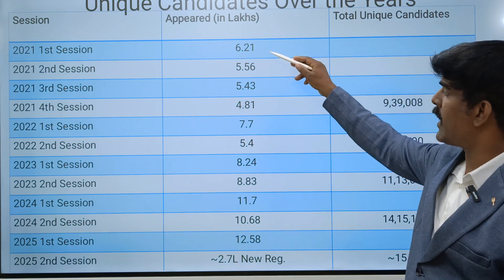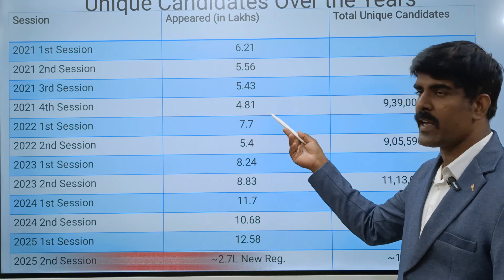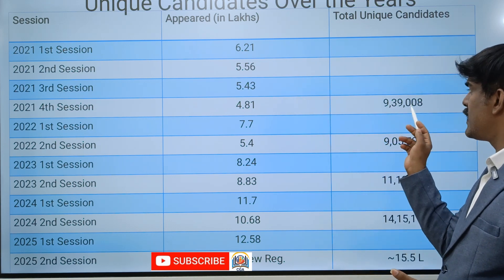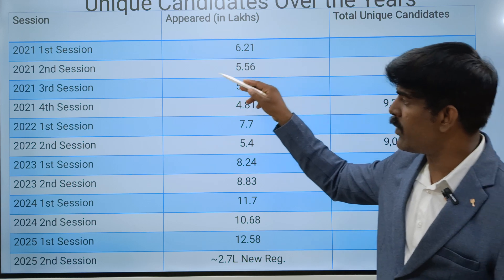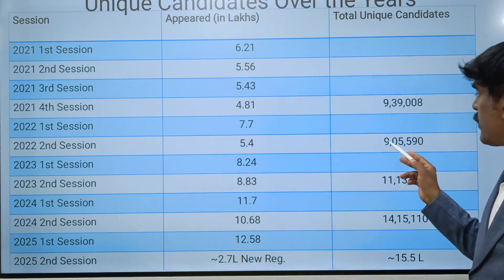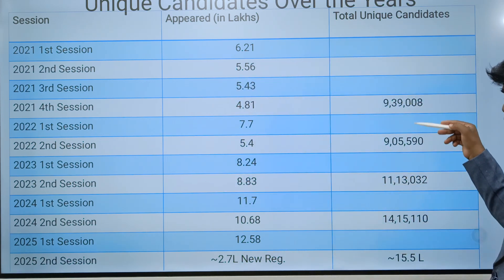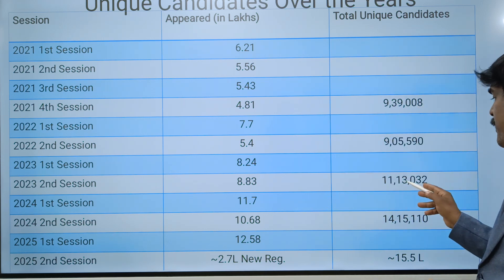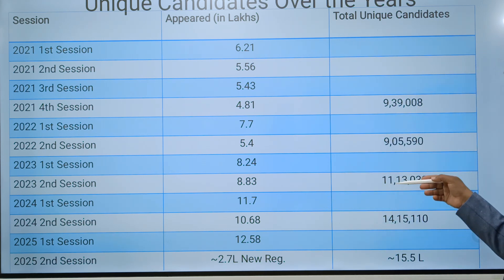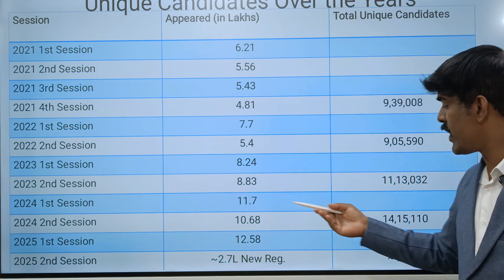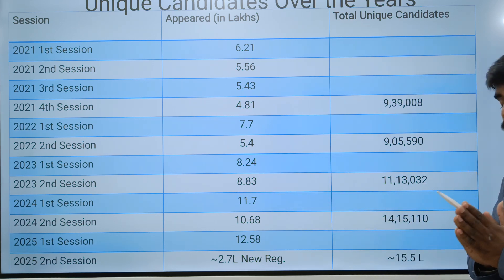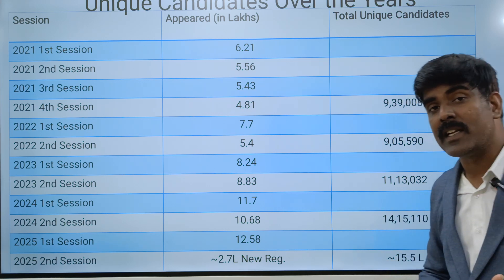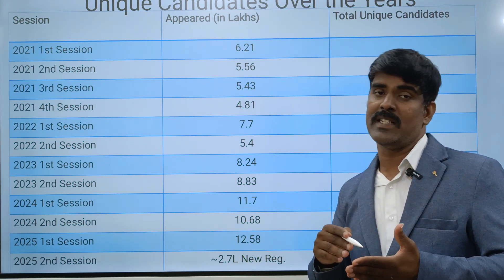In 2021, session 1 had 6.21 lakh students and session 2 had 4.21 lakh students; overall unique students were 9.39 lakhs. In 2022, there were 9.5 lakh students — about 30,000 less than 2021. In 2023, there were 11.13 lakh students, up by about 2 lakhs. In 2024, there were 14.15 lakh students, an increase of 3 lakhs. There are 75,000 seats across IITs, NITs, and Government Funded Technical Institutions.